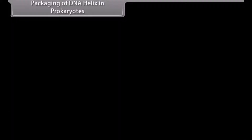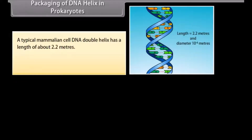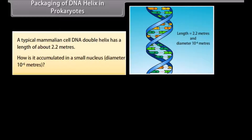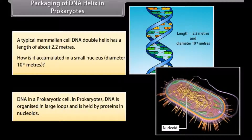Regarding packaging of the DNA helix in prokaryotes: a typical mammalian cell DNA double helix has a length of about 2.2 meters. How is it accumulated in a small nucleus? In prokaryotes, DNA is organized in large loops and is held by proteins in nucleoids.